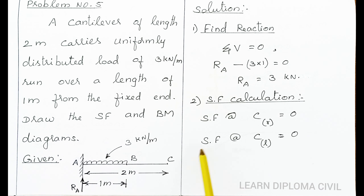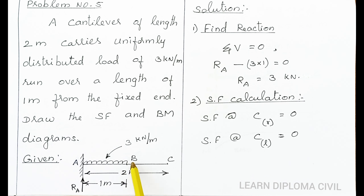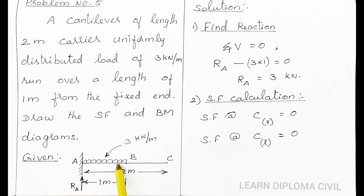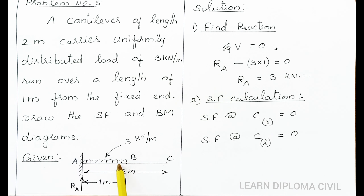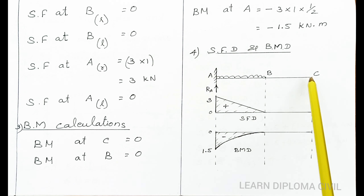Shear force calculation: shear force at left of C — consider section right side of C, which has no forces, so shear force at left of C is 0. Shear force at right of B — section right side of B has no load, so shear force at right of B is 0. Shear force at left of B is also 0.